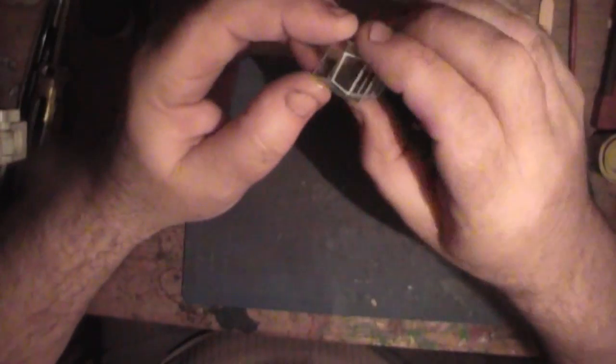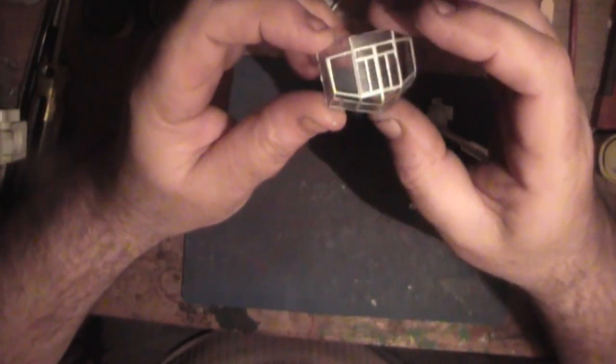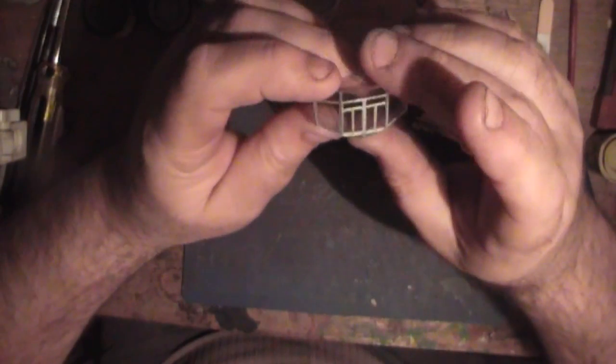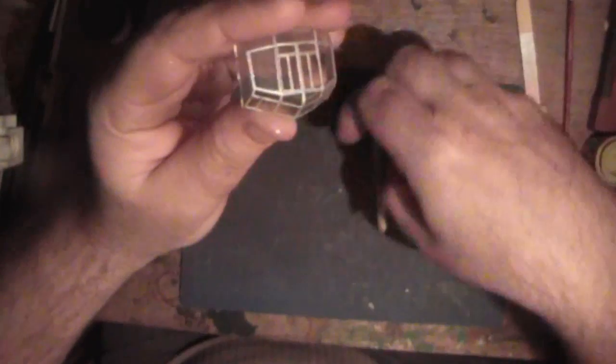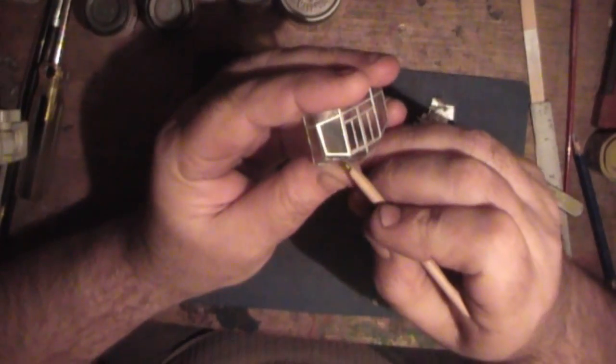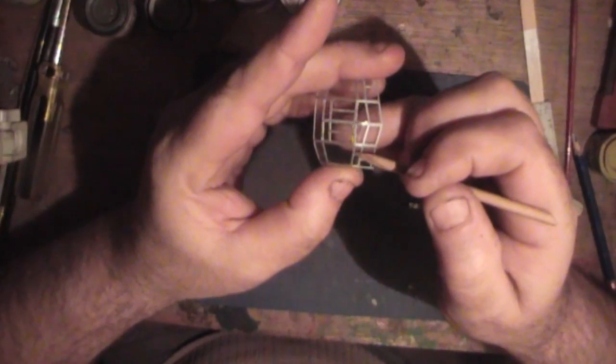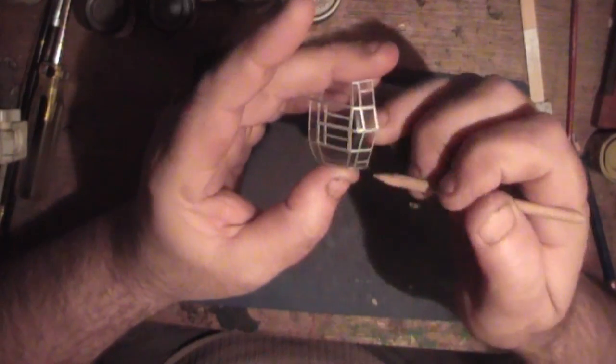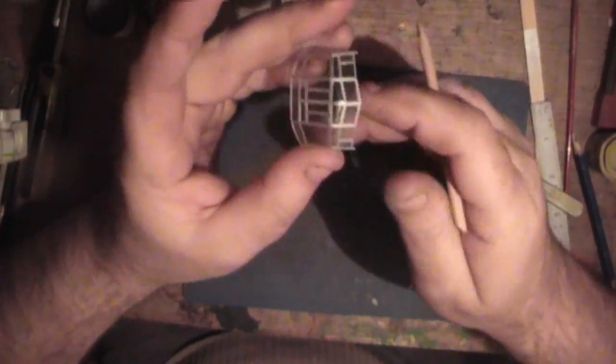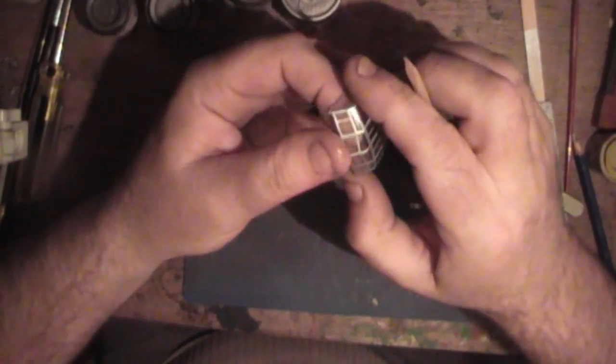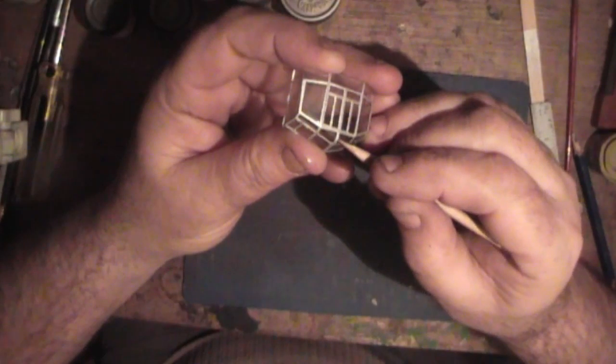I can see a couple of little places where I need to just run the burnisher over them. There's one just there. Little tiny pieces. That's done it. As long as you catch it while it's still... This has been done about an hour now and it's dry to the touch.